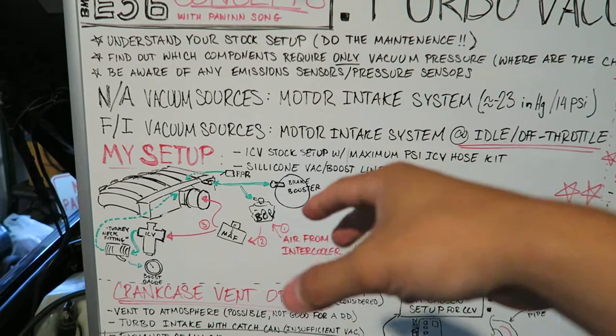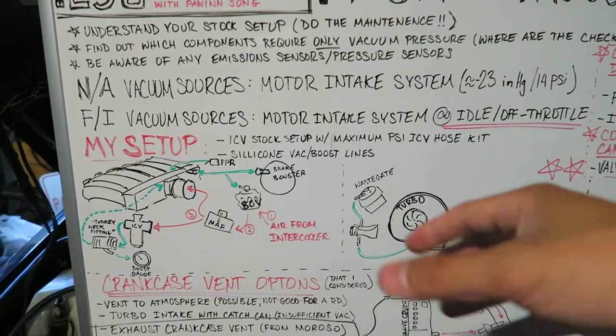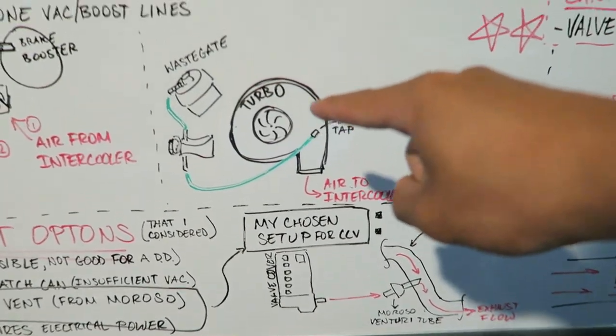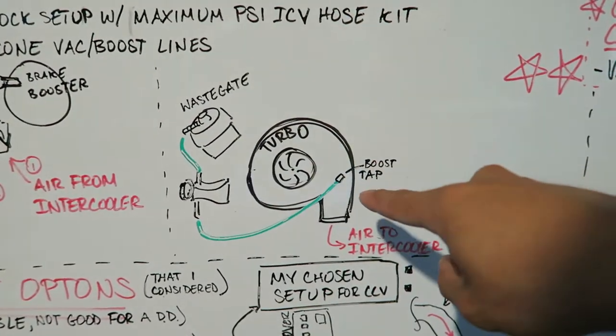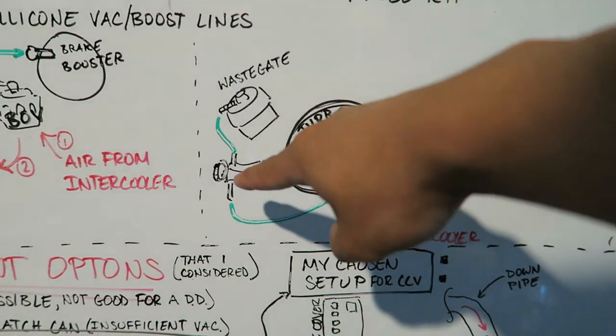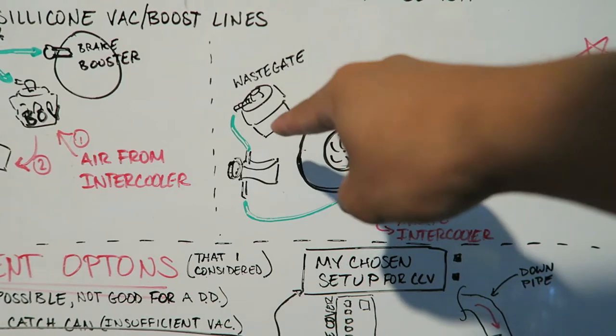I wanted to show you guys a schematic diagram of my entire setup before I actually showed you the setup in person. Basically, you have the turbo right there and it will spool normally, and then you can see there's a boost tap coming from it, and basically that is going to be hooked up to a manual boost controller. That goes to a wastegate.